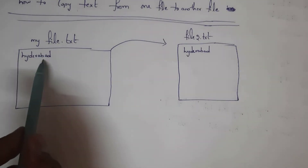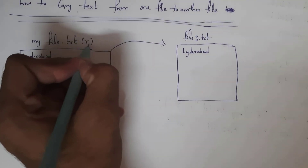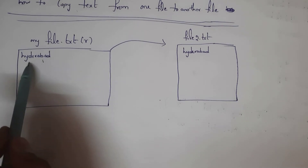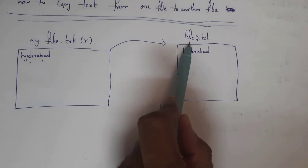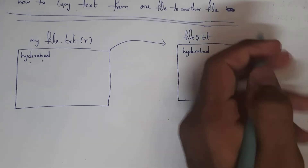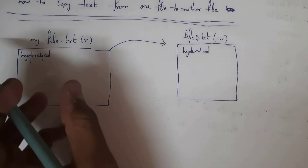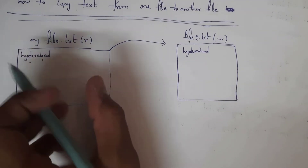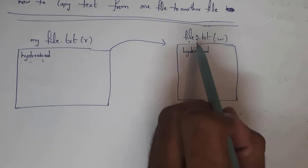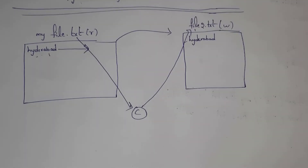To do this, I first need to read from myfile.txt, so I will use read mode for that file. Then I need to write the text 'Hyderabad' into file2.txt, so I will use write mode. I am reading myfile.txt and whatever text is present inside it, I am writing that text into file2.txt using write mode.